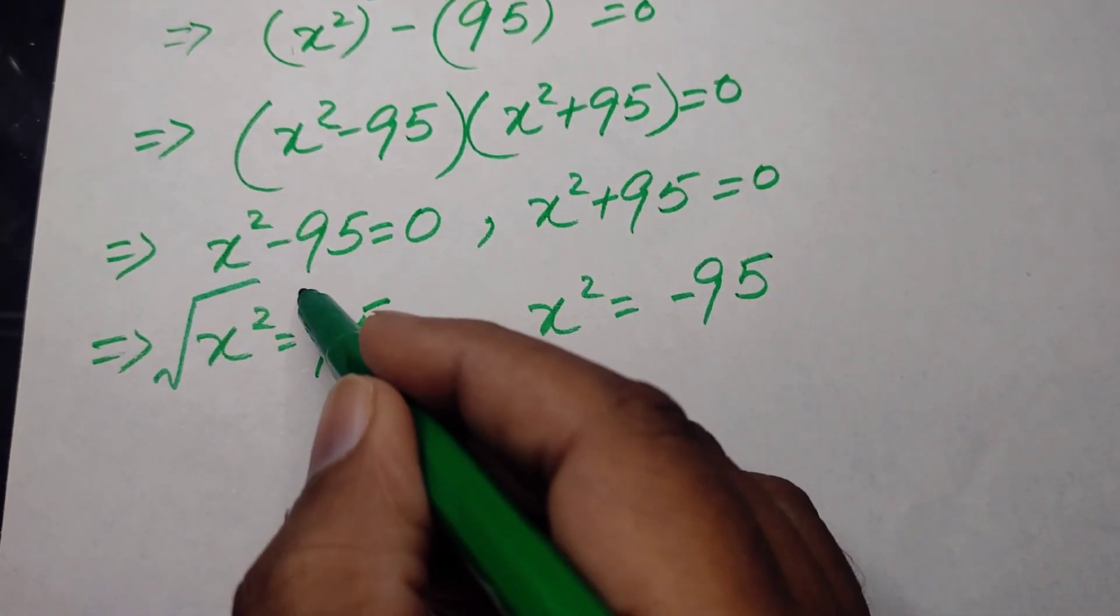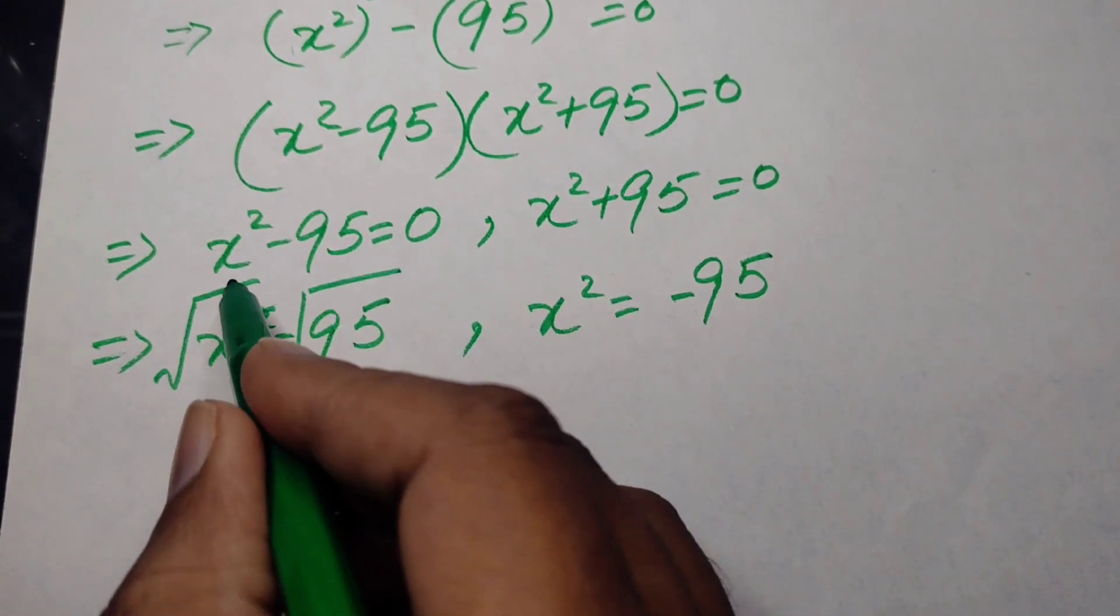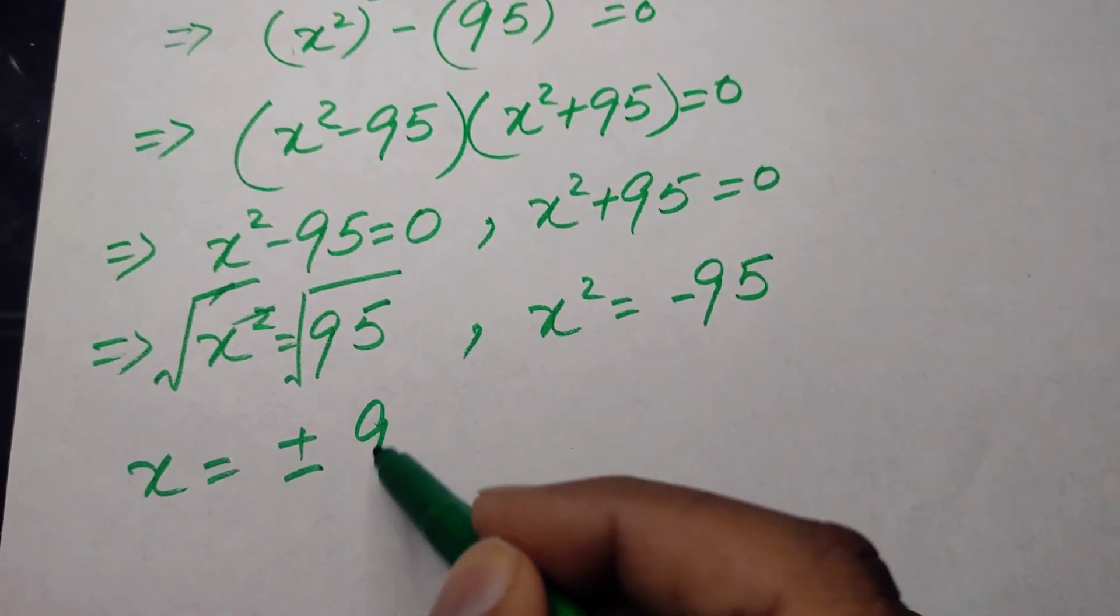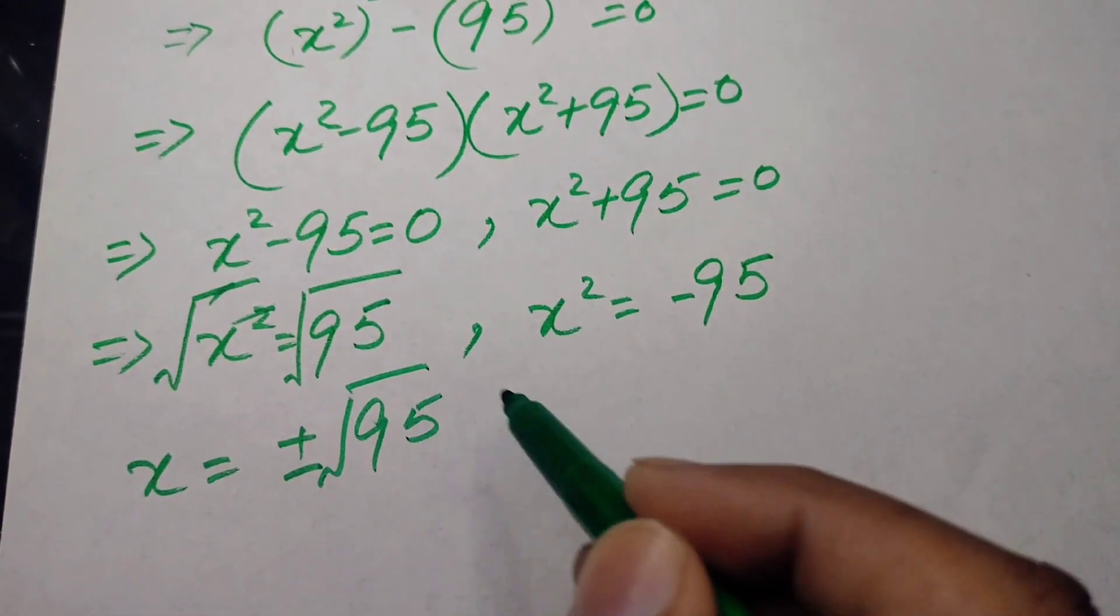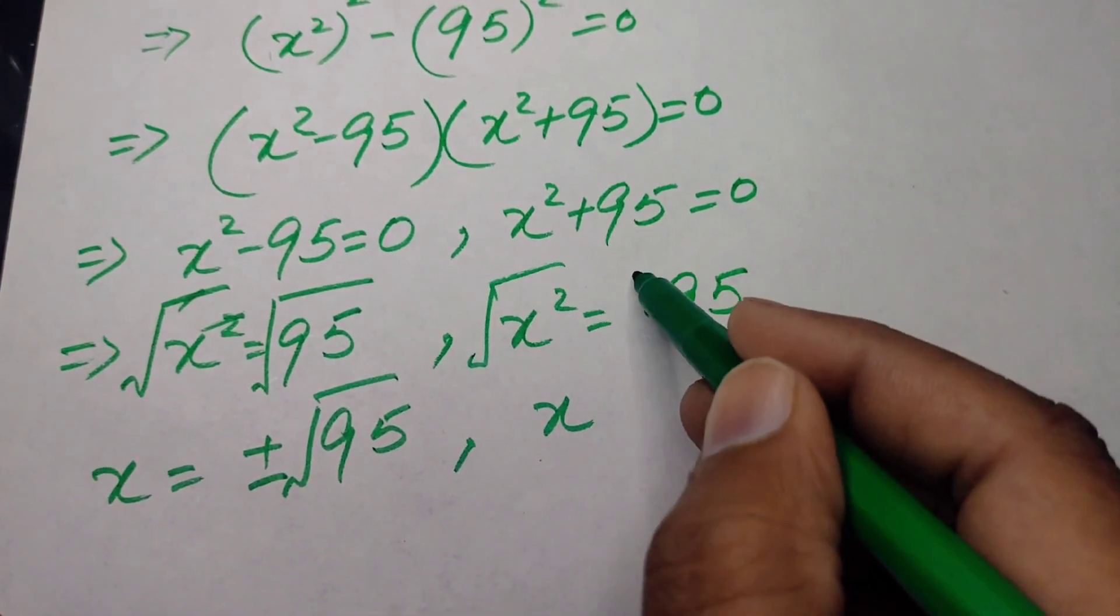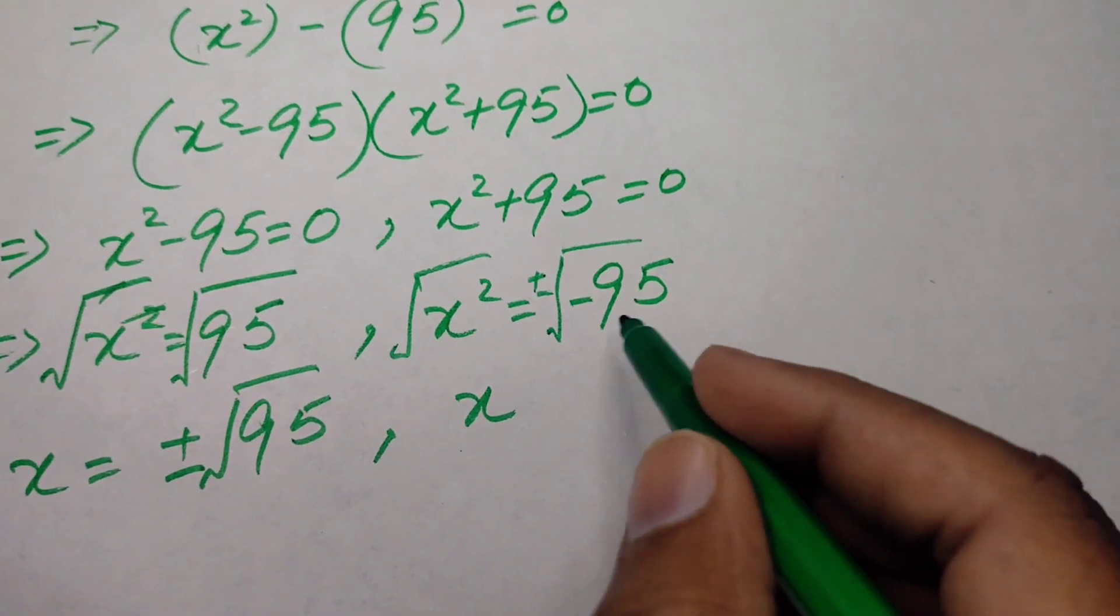After that we will take square root on both of the sides. When we take square root on both sides, these terms cancel out each other and we will obtain plus minus square root of 95.